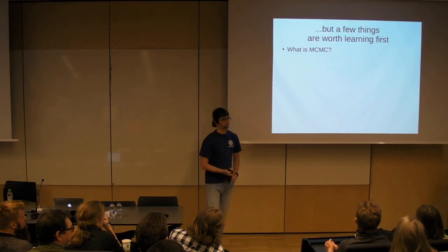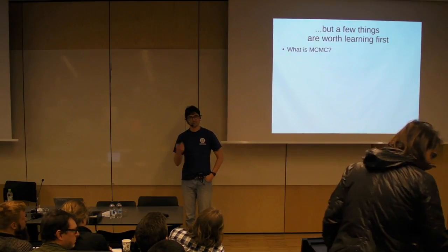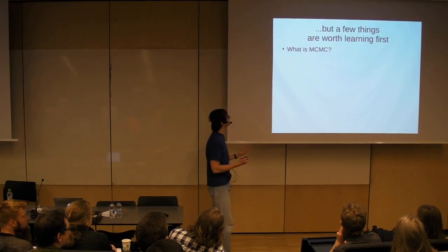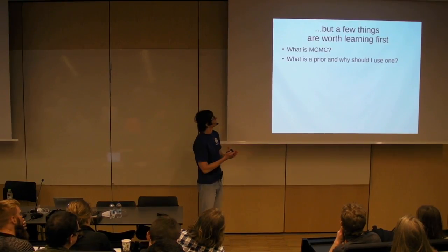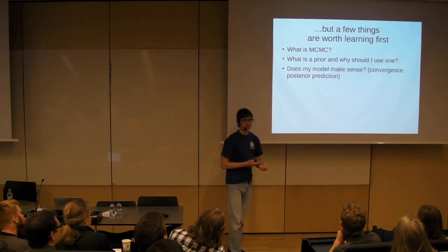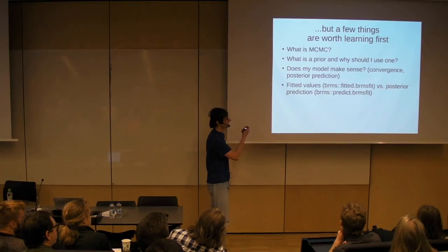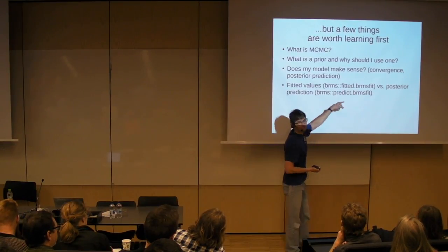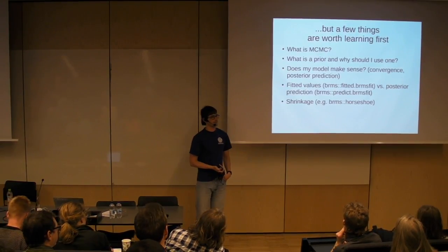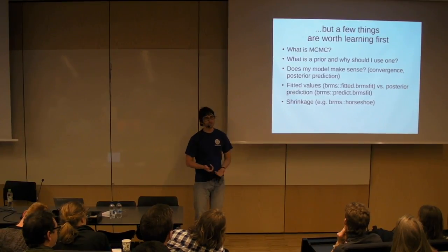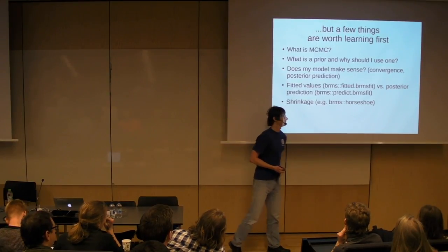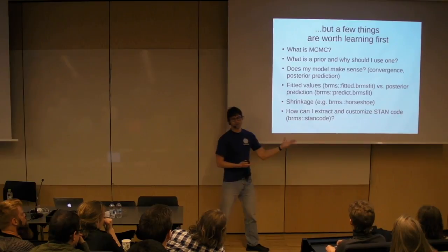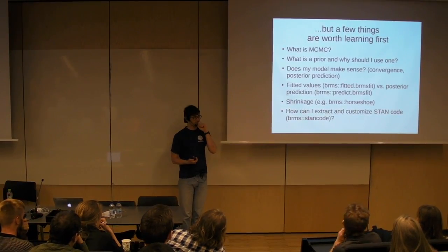The most fundamental thing to understand is the nature of MCMC, because it's so different in Bayesian analysis compared to non-Bayesian analysis — it may take a little getting used to: what are these long rows of numbers, where do they come from, how do I work with them? Priors — enough has been said about those. Check for convergence — very simple with existing tools. One recurring source of confusion is the difference between fitted values and posterior predictions — there are actually two different functions in brms for this. Shrinkage is really nice: if you had 20 different collections instead of five, it would make sense to impose stronger shrinkage priors, and there are built-in tools for this. If you want to go deeper, you can extract the Stan code that brms generated and modify or customize it — much easier than writing it from scratch.